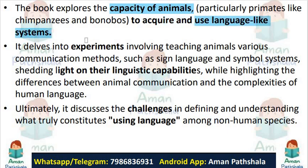Basically, in this chapter, the topic is about the capacity of different animals. As we know, we have languages like Hindi, Punjabi, English, Urdu — many languages. Animals don't have language in that form or with any script, but they do have a language-like system through which they communicate. They don't have as many words or vocabulary as us, but there is a system like language through which they communicate.